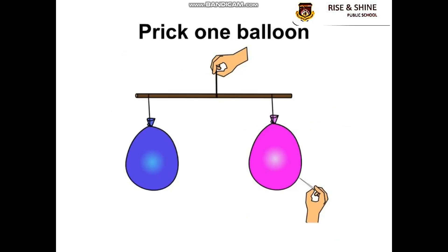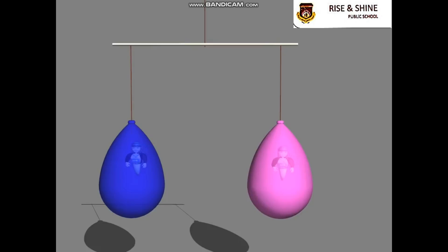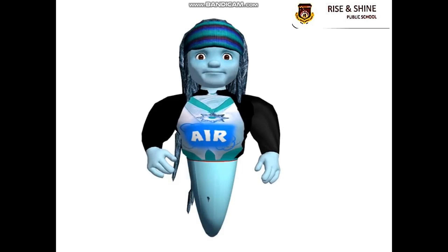Now prick one of the balloons — say the pink one — with a pin. The stick end with the inflated balloon goes down. Why is it so? Inside the inflated balloon there is air. When we prick the pink balloon, air rushes out of it. The side with the blue balloon, which still has air inside, is heavier. This proves that the air inside the balloon makes it heavier, and this means air has weight. Yani hawa ka wazan hota hai aur stick ke jis side per bhara hua balloon hoga, wo side neche ho jayegi.